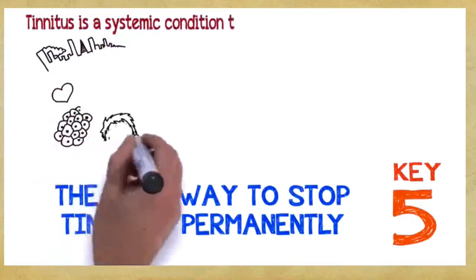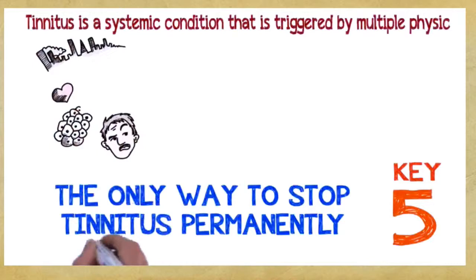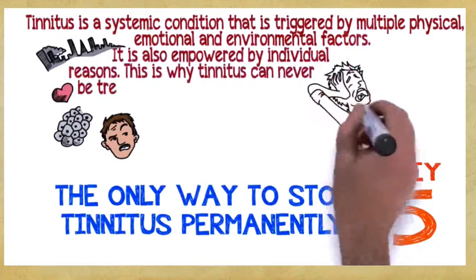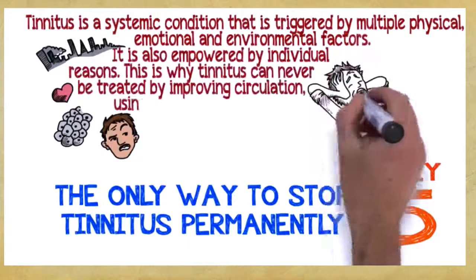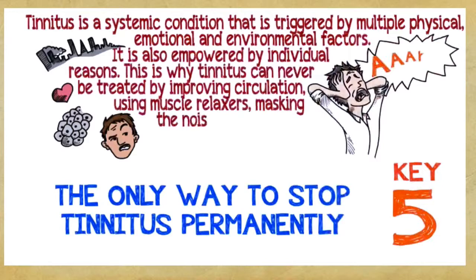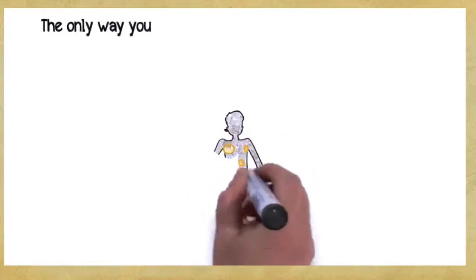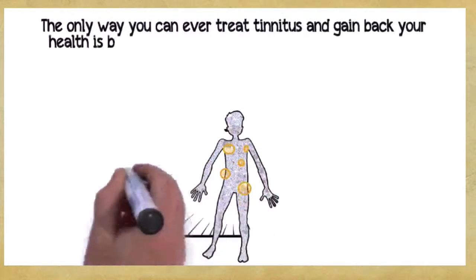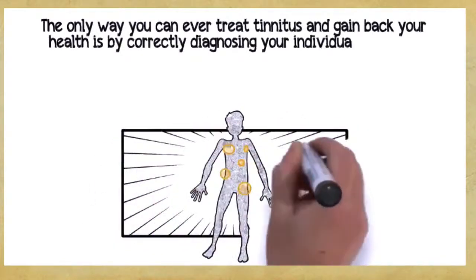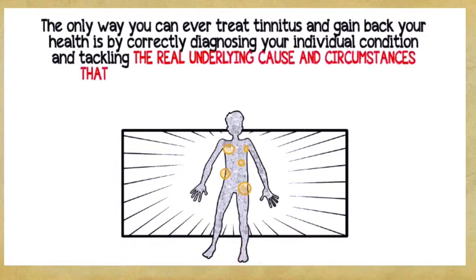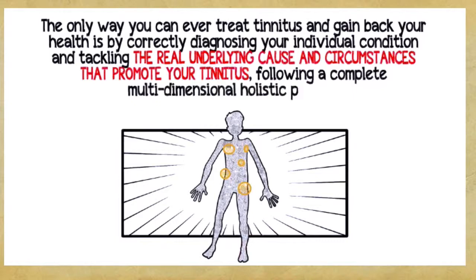Key number five: The only way to stop tinnitus permanently. Tinnitus is a systemic condition that is triggered by multiple physical, emotional, and environmental factors. It's also empowered by individual reasons. This is why tinnitus can never be treated by improving circulation, using muscle relaxers, masking the noise, or cutting a nerve in your auditory system. The only way you can ever treat tinnitus and gain back your health is by correctly diagnosing your individual condition and tackling the real underlying cause and circumstances that promote your tinnitus, following a complete, multi-dimensional, holistic program.